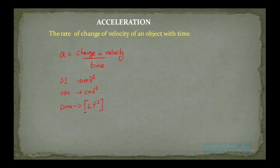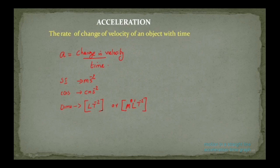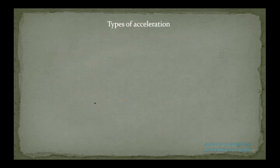The dimensional formula can be written as M to the power 0, L to the power 1, T to the power minus 2 — same as LT to the power minus 2. There is no mass component here. This is how we represent acceleration. Now let's discuss the different types of acceleration.